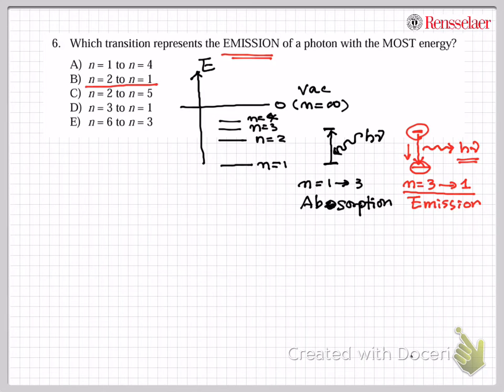So first thing is now you need to figure out which is an emission state. And so let's say, this one, this one, this one is representing the transition for the emission, whereas A and C representing the absorption of a photon for the case. So now the question is among choice of B, D, and E, which one represents the most energy? And how do we calculate that?